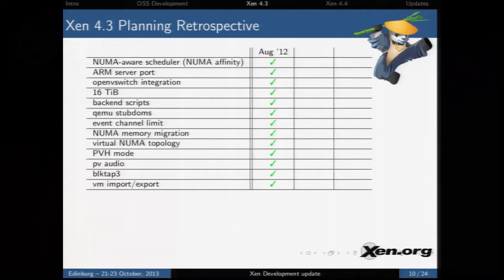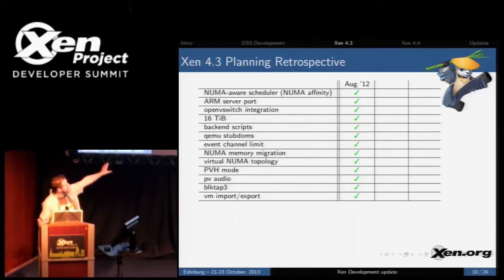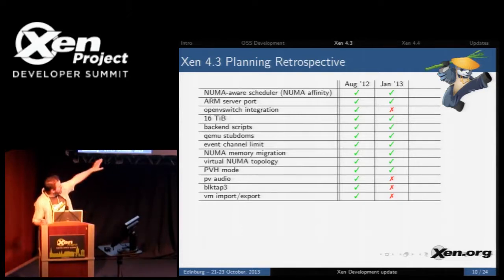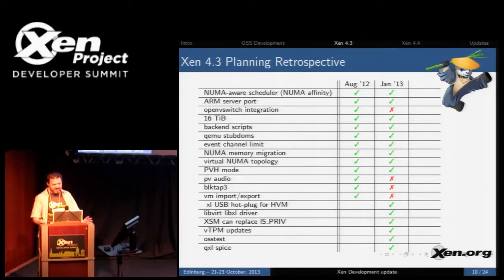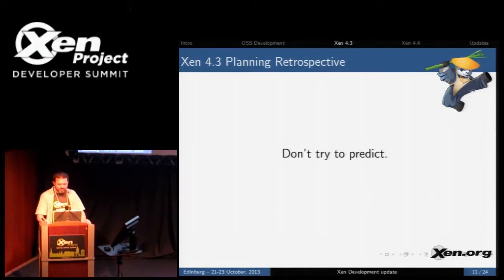Looking into the future: I had a big list of amazing things I thought we could get done in nine months. In January I did a mid-cycle evaluation and posted a blog saying most things would get done, but PV Audio and BlkTap3 probably wouldn't. Of course, when the release came, a large number of things didn't make it. The lesson I've learned, as many people have, is that you just don't try to predict exactly when things are going to be done for software.